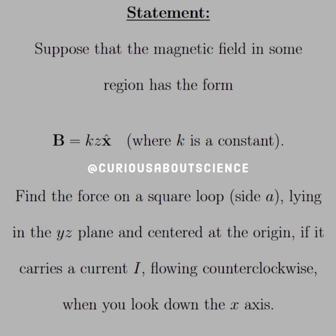The statement reads: suppose that the magnetic field in some region has the form B equals kz in the x-hat direction where k is a constant.